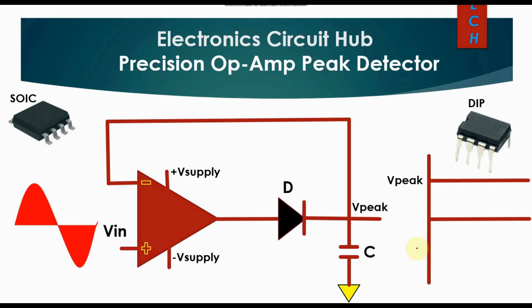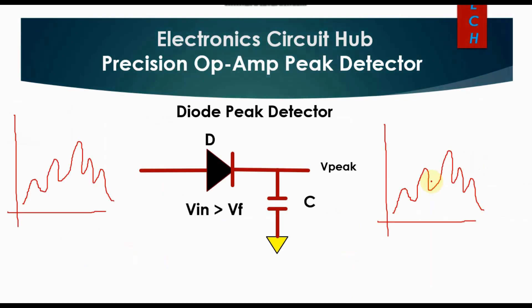This is the basic block diagram of an op-amp peak detector circuit. Here is an input signal, here is the op-amp, here is a diode, and it is connected to a capacitor. This is the peak output voltage. Now we will understand the working of a diode peak detector circuit.